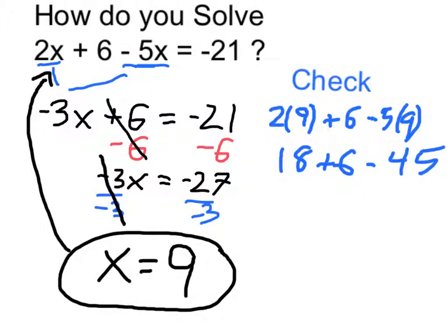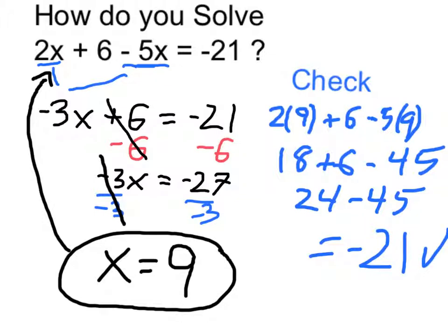18 plus 6 is 24, and when I subtract 45, I do get negative 21, which is what I had in my original. So that's what I expected — therefore x equals 9 is the correct answer to this equation. Thank you.